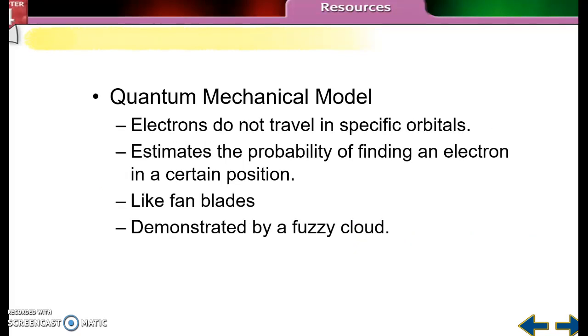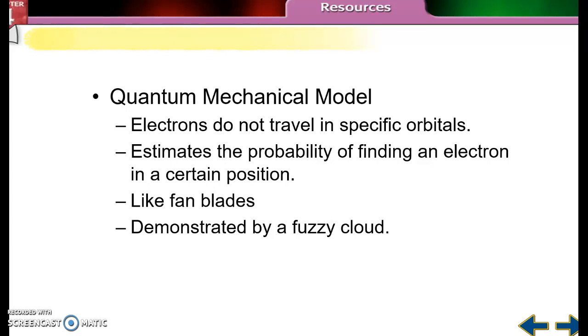He treated the electrons as waves rather than particles. And basically, he said that electrons don't have a specific orbital. This is different than what Bohr said. Bohr said they have their specific orbit. And Schrodinger said, no, they don't travel in specific orbitals. You could probably find an electron in a certain position. But those positions are going to be a lot more like fan blades and they're going to be demonstrated by a fuzzy cloud.